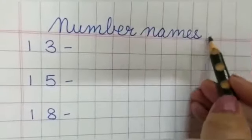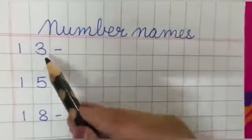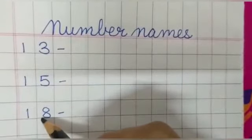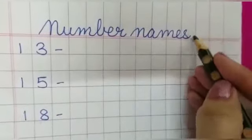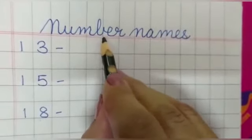Now, let's see. Today, ma'am has written no number here. Why did we not write? Because today, we are writing number names. That's why we have written no number here. Only, we have written number names.